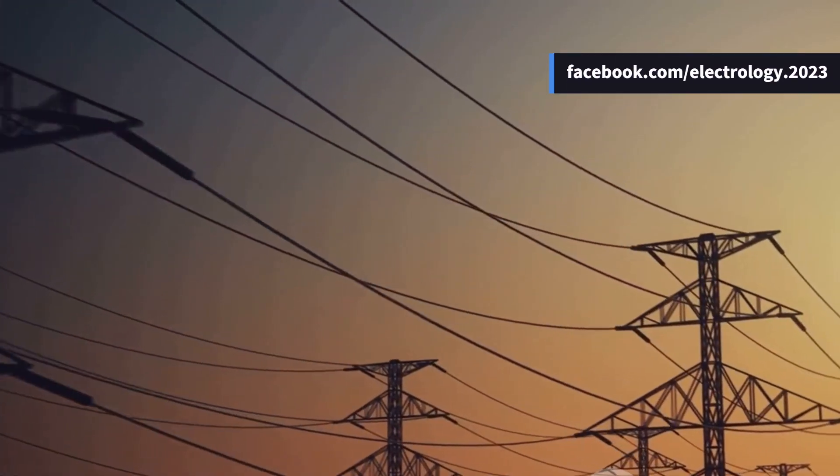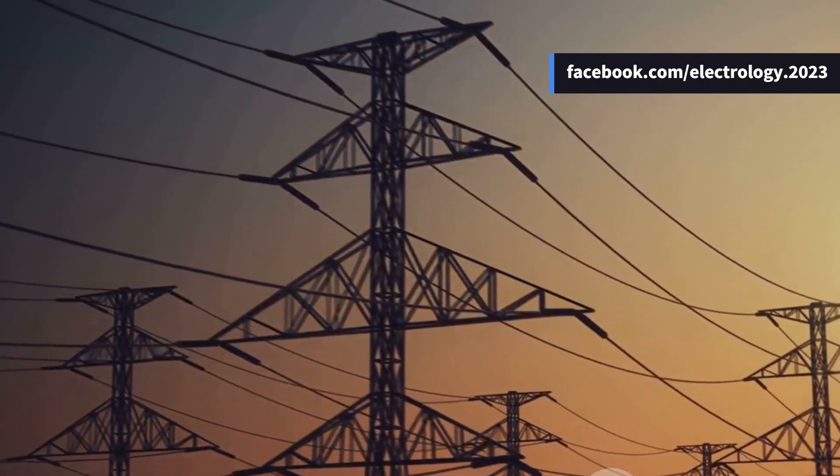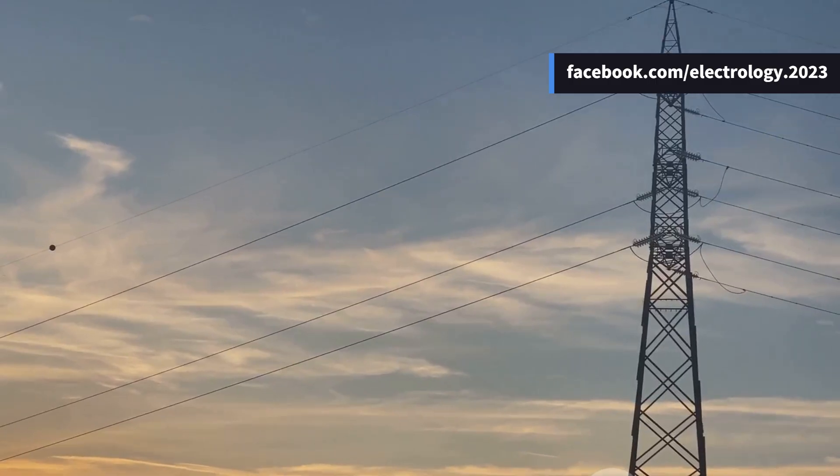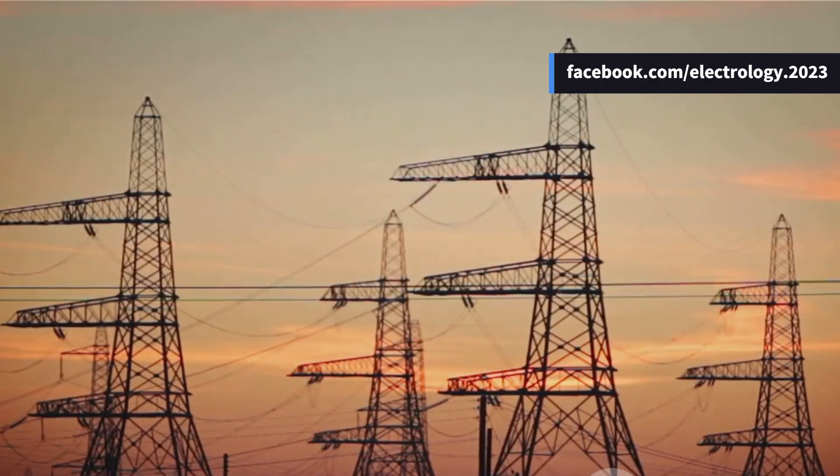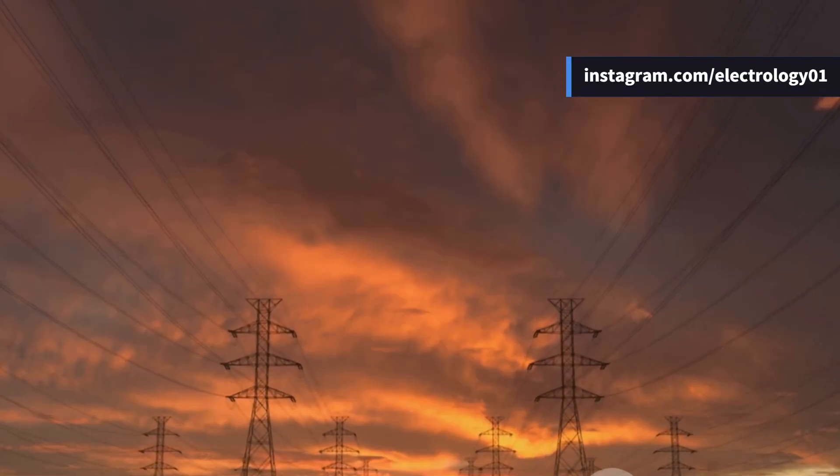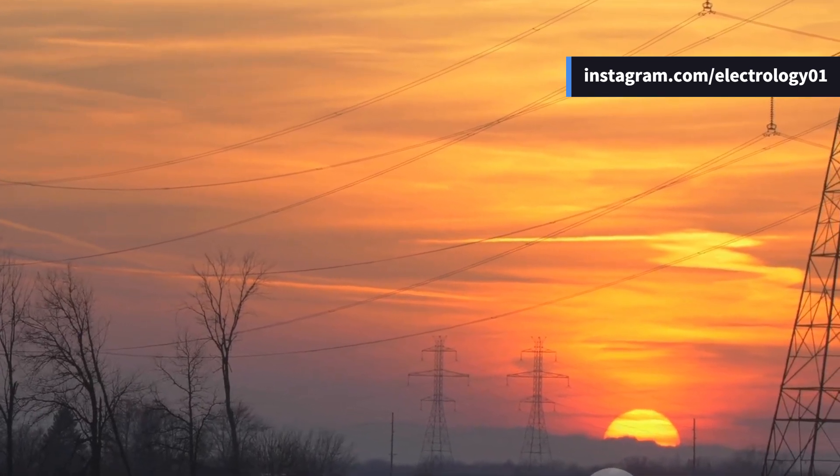So friends, that's everything about sag in overhead lines—from equal supports, unequal supports, to wind and ice effects, and even a real numerical example. Next time you walk under transmission lines, you'll know why they sag and you can even calculate approximately how much sag there might be. Tell me in the comments: in your area, do you notice more sag in winter or in summer?